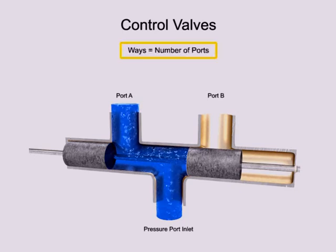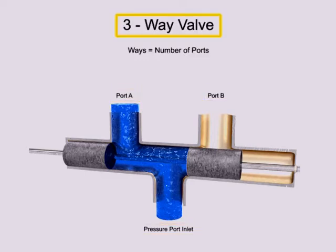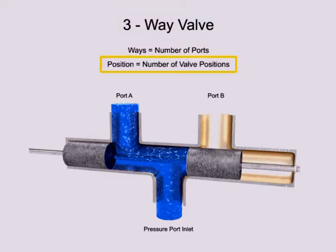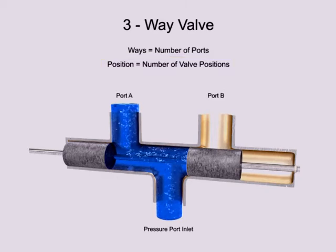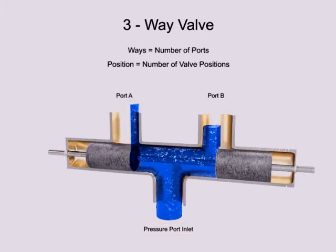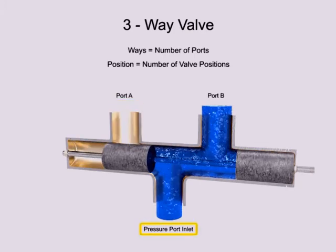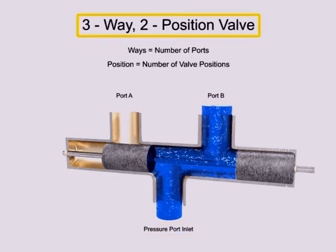A way refers to the number of active porting connections called ports. This valve has three ports, so it is a three-way valve. The term position refers to the number of discrete operating positions of the internal valve element. For this spool valve, one position allows fluid to flow from the inlet to port A and a second position allows fluid to flow from the inlet to port B. Therefore, this is a two-position valve.